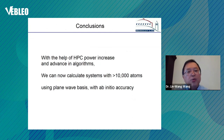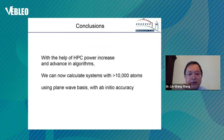In conclusion, with the help of high-performance computing power increases and advanced algorithms, we can now calculate systems of 10,000 atoms or even bigger using a plane-wave basis, which is the most accurate basis at ab initio accuracy.